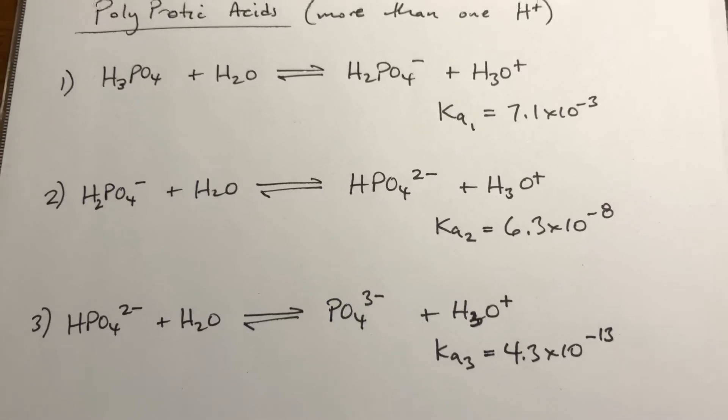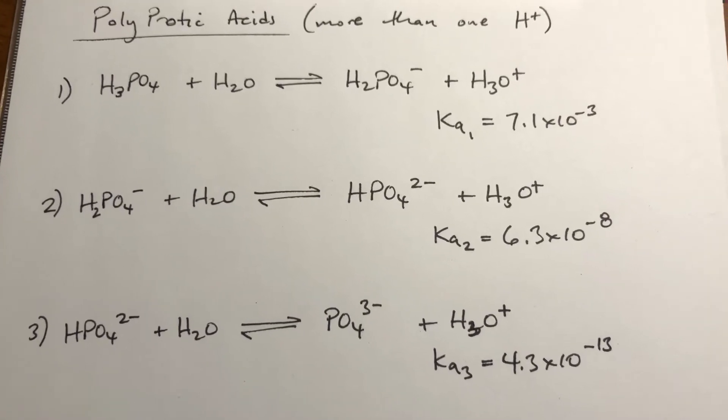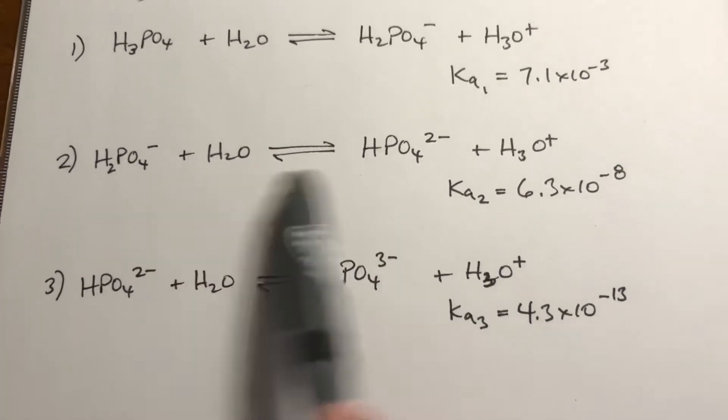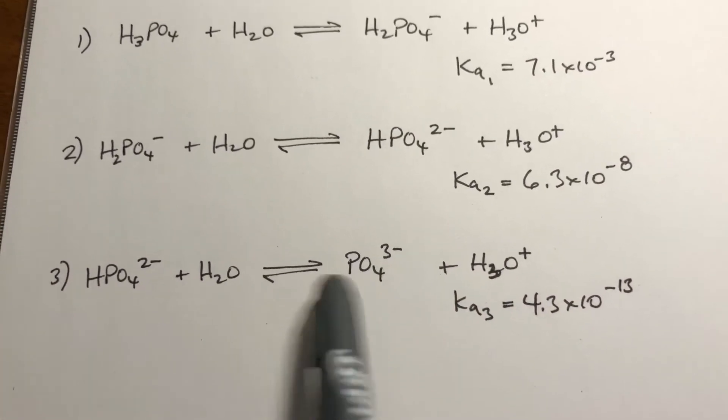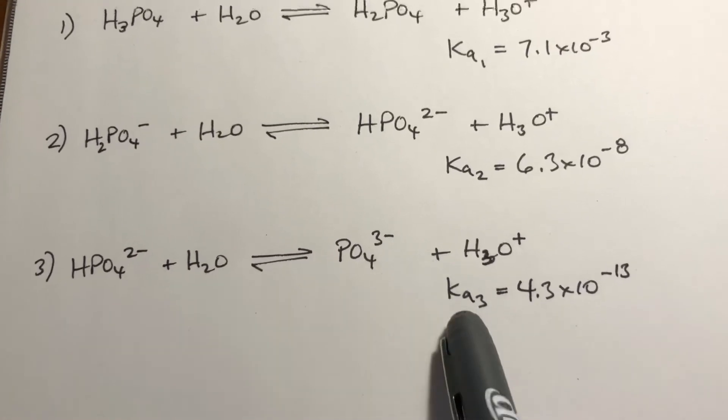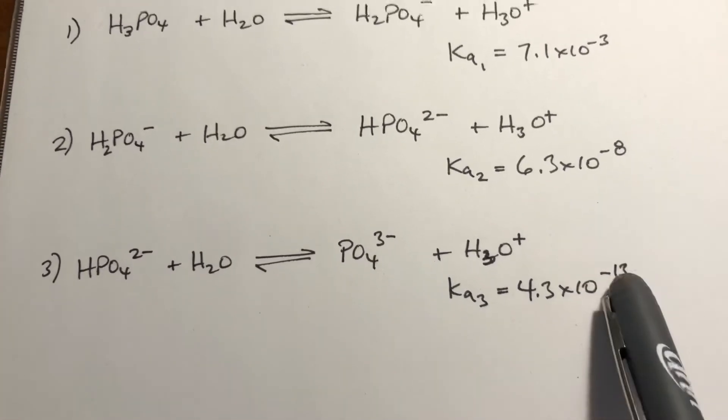So the same thing is true of the next one. So this also still has a proton on it. It can undergo this process. It also has a Ka, which is about 10 to the fifth of that.